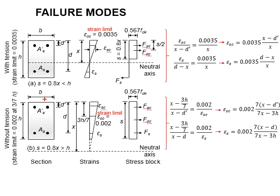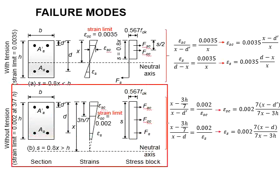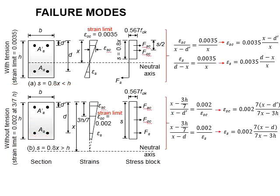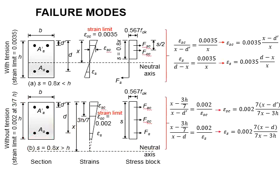Now let us look at the column sections where the neutral axis will be beyond the cross-sections of the column. The strength limit happens here, which is 3H/7 from the top of the columns.